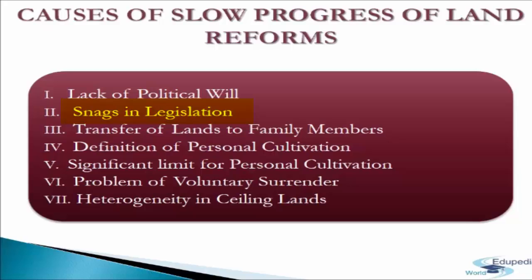Snags in legislation means inadequate definition of tenants. Since a considerable number of tenancies in India are oral and informal, consequently due to incomplete land records, they are not in a position to prove that they are the actual tillers of the soil. The third cause is transfer of lands to family members. To escape the laws relating to land ceiling, the zamindars indulged in large-scale transfer of land to their family members, because of snags in the definition of personal cultivation in the laws. This reduced the effectiveness of ceiling lands significantly.